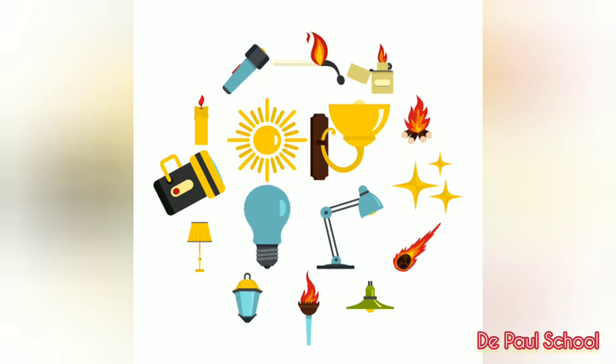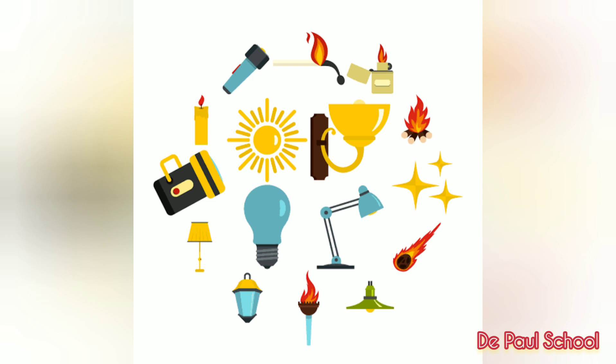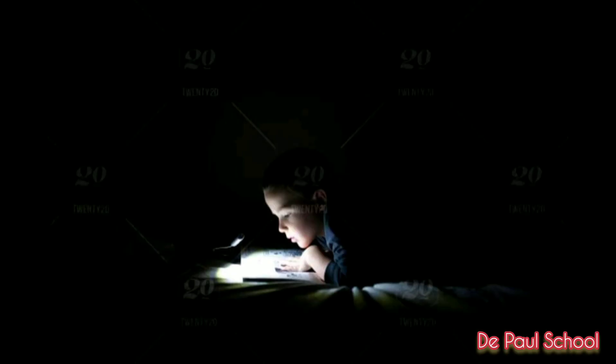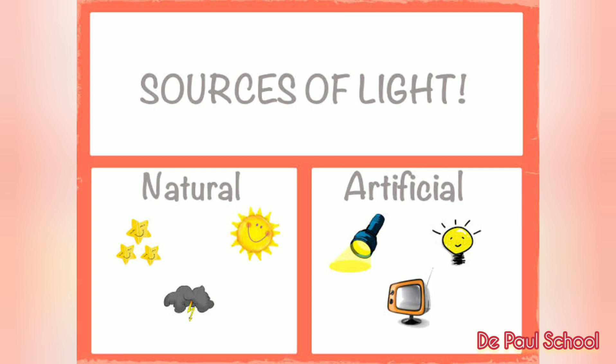Now the last form of energy is light energy. When someone turns off the light in a room, you cannot see anything around you. Light is a form of energy that enables us to see things. We cannot feel it but we can only see it. Light energy can be from both natural and artificial sources. The natural source of light is the sun, and artificial sources include bulbs, tube lights, etc.